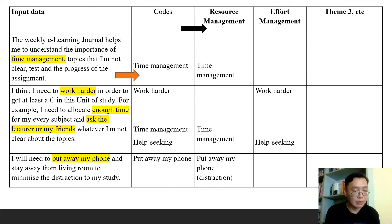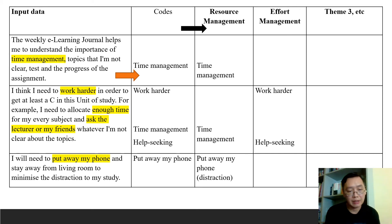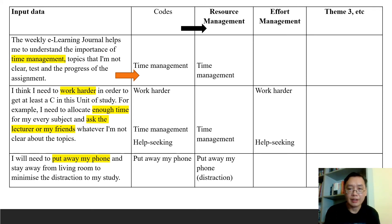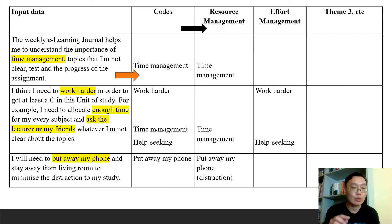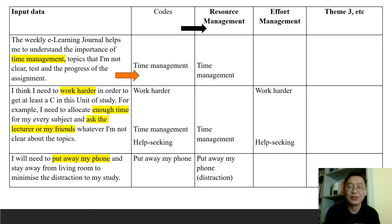Another code is 'asking help from lecturers or friends,' which falls under effort management — specifically, help-seeking under effort management. A third finding is very interesting: a respondent mentioned 'putting away my phone.' A handphone is a resource, but in this case it is a distraction. Back in 2004, based on the theory, handphones were not very popular, so this is a new finding that can add to the knowledge of SRL in the area of resource management pertaining to management of handphones.